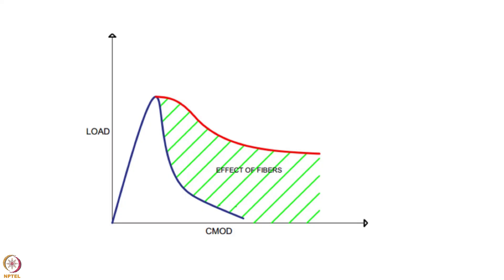These parameters are used in the design of FRC elements. This is a typical load–crack opening response of plain concrete versus fiber reinforced concrete. In the case of plain concrete, there is a sudden drop after the peak, showing brittle failure. In the case of fiber reinforced concrete, there is an enhanced post-peak load carrying capacity due to stress transfer by the fibers across the crack, as captured in our test.